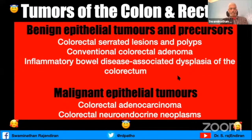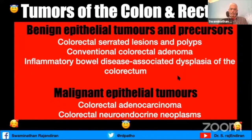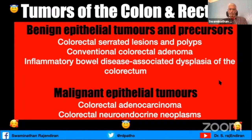The tumors of the colon and rectum are mainly divided into benign epithelial tumors and precursors, and malignant epithelial tumors. In the benign category we have colorectal serrated lesions and polyps, conventional colorectal adenomas, and inflammatory bowel disease-associated dysplasia. In the malignant epithelial tumors we have colorectal adenocarcinoma and colorectal neuroendocrine neoplasms.